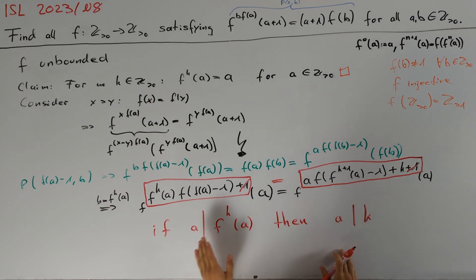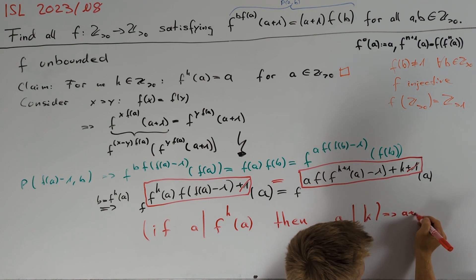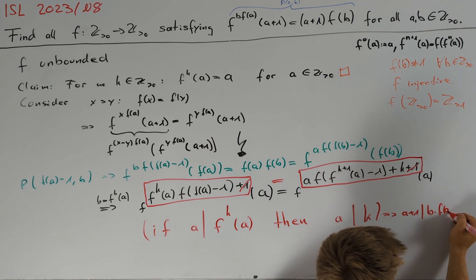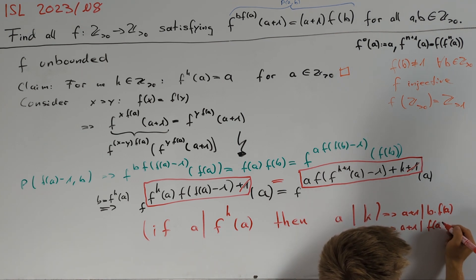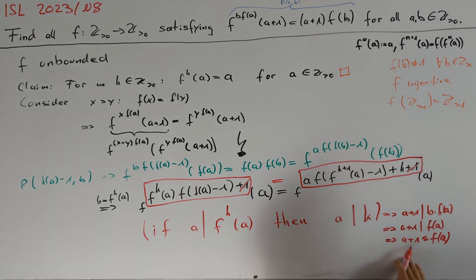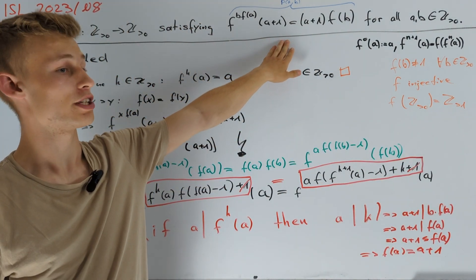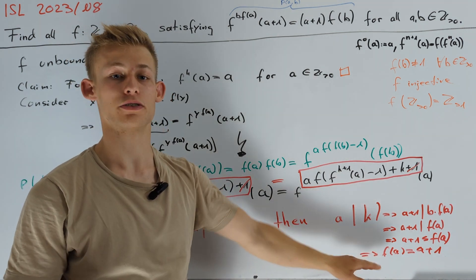Applying this result to our previous observations from above, we get that the statement here implies a+1 divides b times f(a). Taking b equals 1, we get that a+1 divides f(a). And therefore, we have that a+1 is less than or equal to f(a). Recall that f attains every value greater than 1. Together with this inequality here, we can conclude that f cannot skip any number. And therefore, this implies that f(a) must be equal to a+1. We can plug this back into our original functional equation and indeed see that this works as a solution. And therefore, we found this solution, which is the only solution, and we are done.